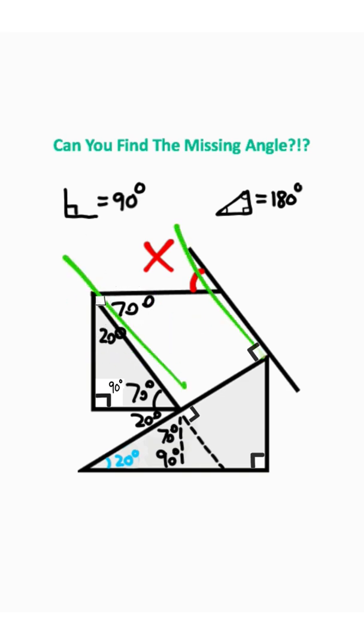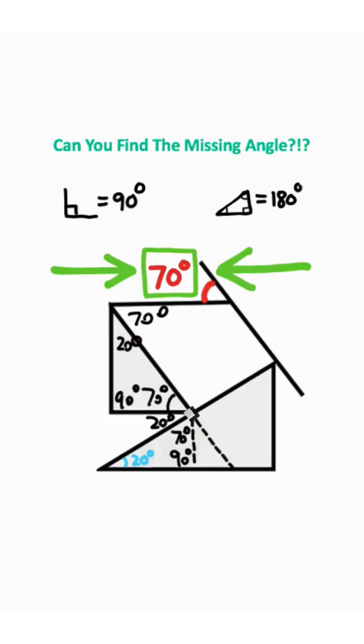Whenever you have two parallel lines, and you have two angles here and here, the two angles are going to be equivalent. So our unknown angle X is 70 degrees since these two angles have to match, and that is the unknown angle.